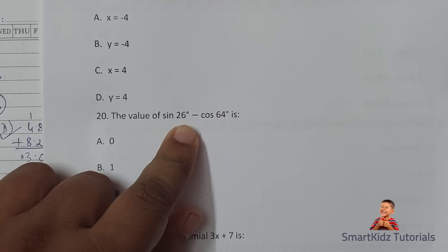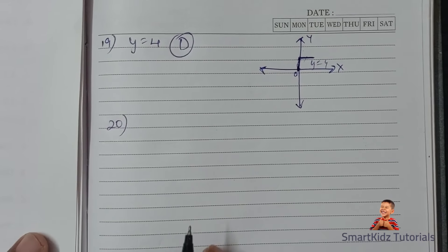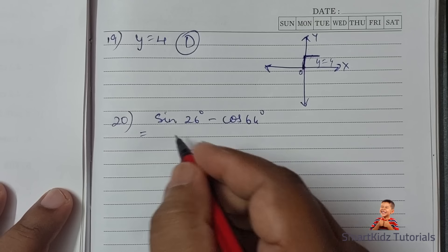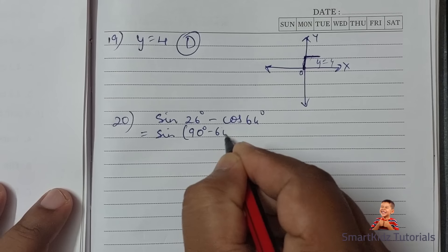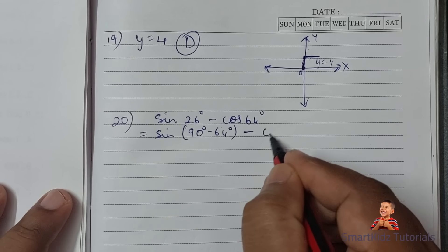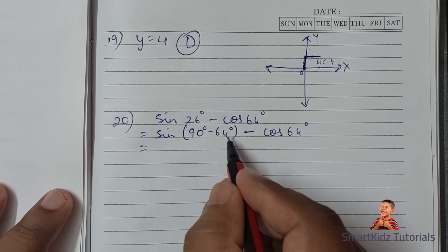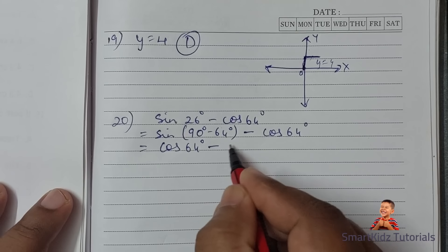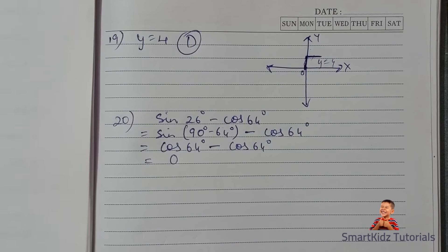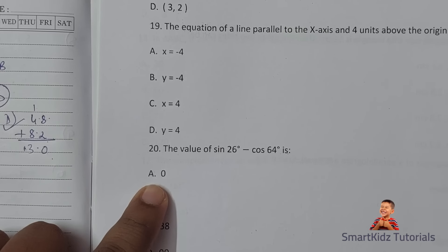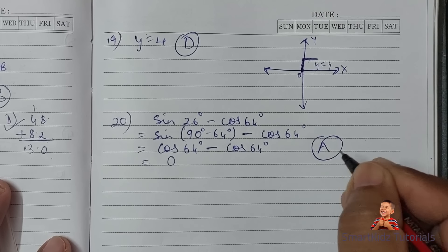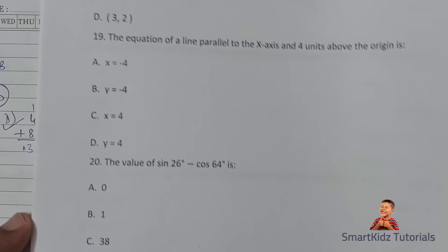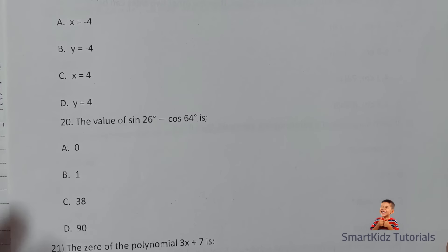Question 20: The value of sin 26° − cos 64°. We write sin 26° = sin(90° − 64°) = cos 64°. So cos 64° − cos 64° = 0. The correct option is A, zero. With that we have finished 20 MCQ questions — halfway through the MCQ, meaning 20 marks done.